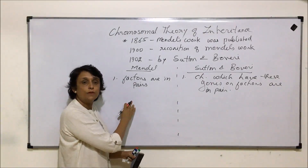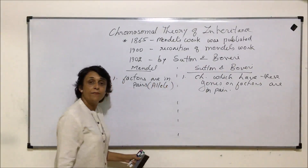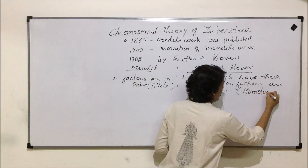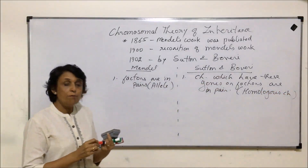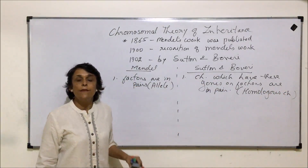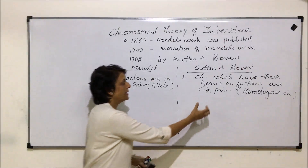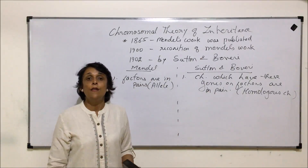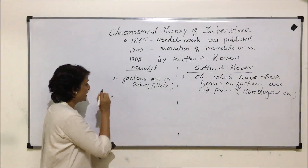The two forms of the same gene or factor are known as alleles. And in terms of chromosomes, they are known as homologous chromosomes. What Mendel was trying to say was that the factor or genes are present in two forms — a dominant and a recessive one — and these genes are also present in pairs on a physical structure, the chromosome.